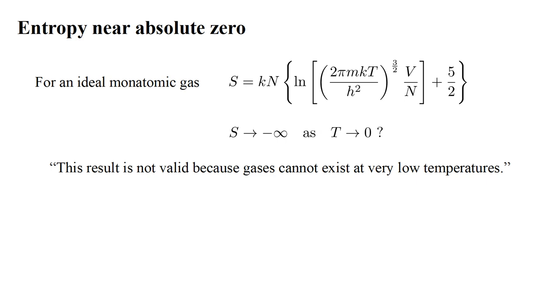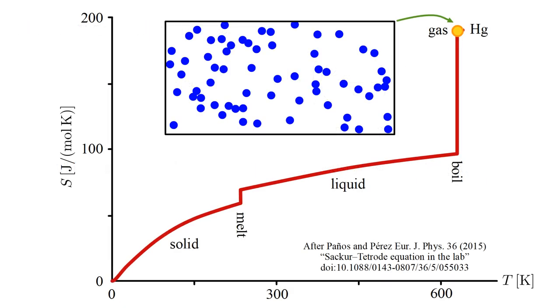We can argue that this result is not valid, because gases cannot exist at very low temperatures, so the expression is not applicable in this limit. As we saw in the previous video, the Sackur-Tetrode equation accurately predicts the entropy of a monatomic gas. However, in general, when cooled, real gases will condense to a liquid and then freeze to a solid. The equation is not applicable to these states.